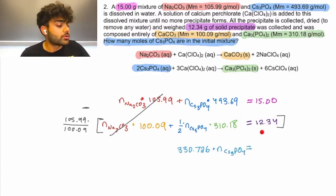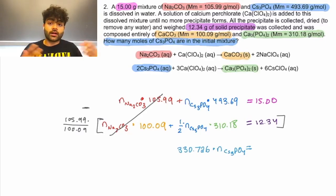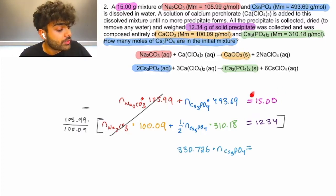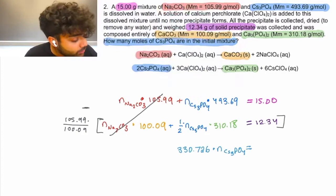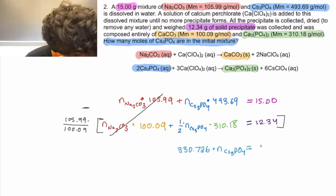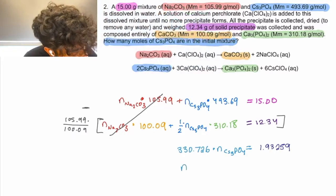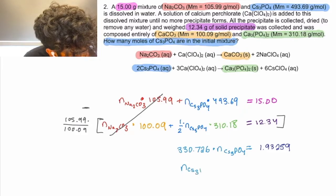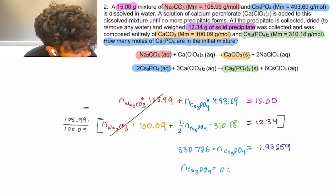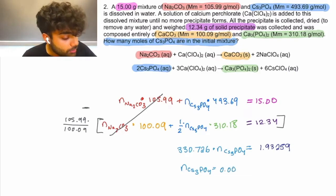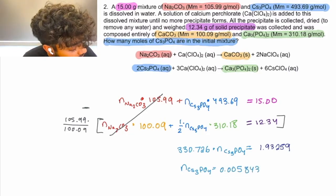And now, we'll do the same thing to our 12.34 that we have here. So, 12.34 divided by 100.09, plug that in, multiply by 105.99, and now we take our whole answer and we subtract it from that 15. And what that's going to equal is 1.93259. So, we've reduced this to one variable, one equation, and now we can divide through by the 330.726 term. We'll get the moles of CS3PO4 are 0.005843 moles.